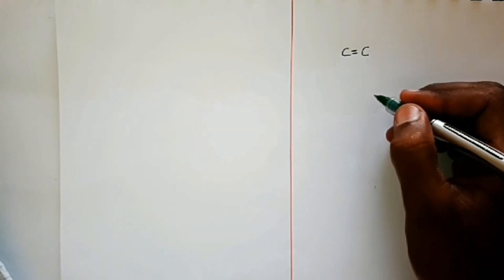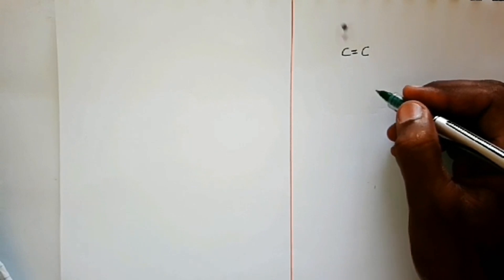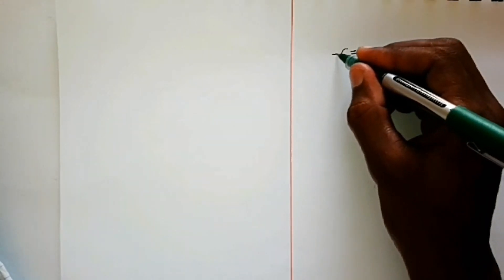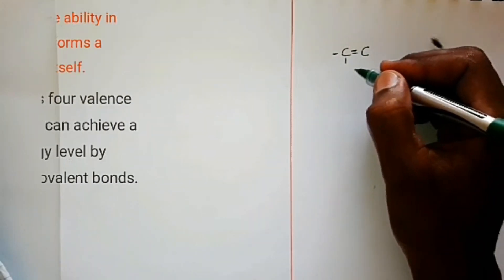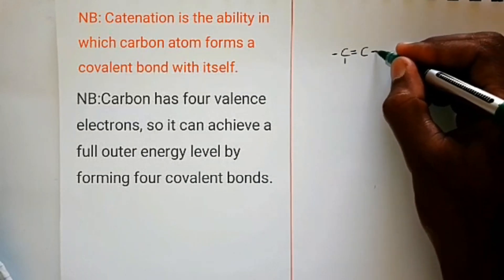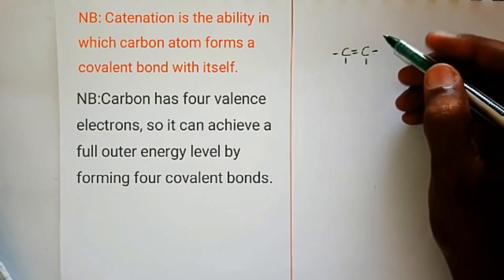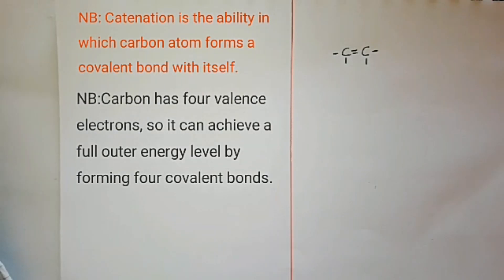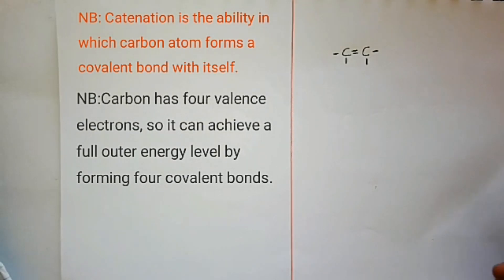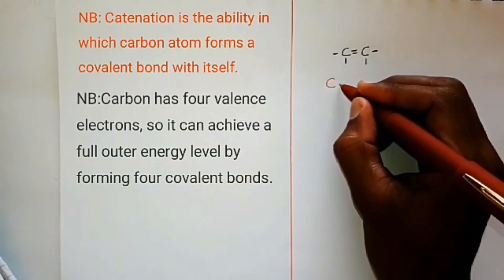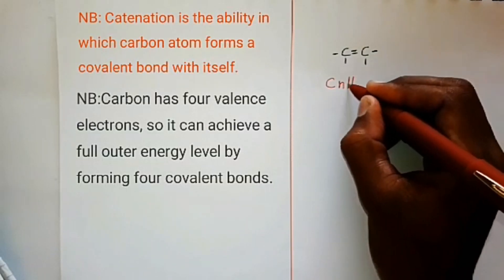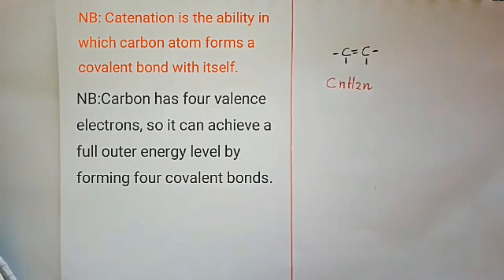Carbon has four valence electrons, therefore it has four covalent bonds. The general formula of alkenes is CnH2n, where n is the number of carbon atoms.